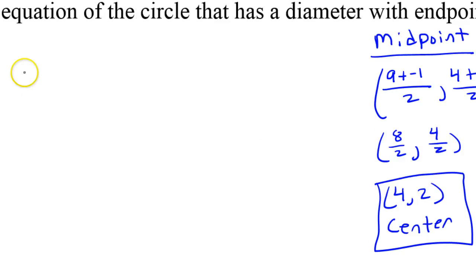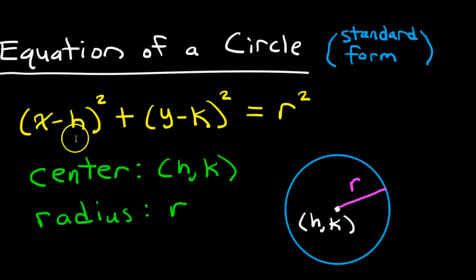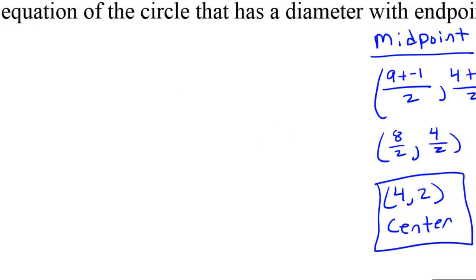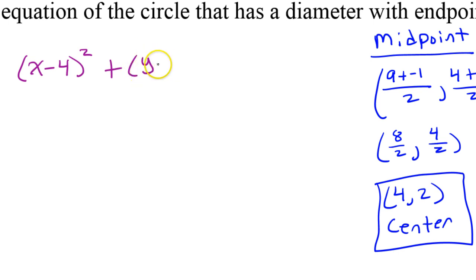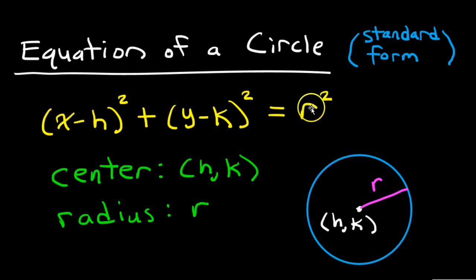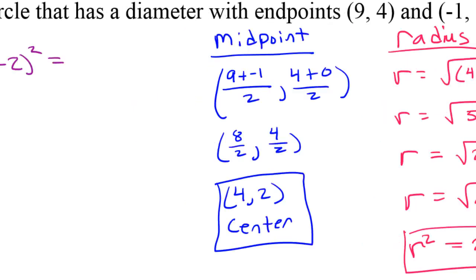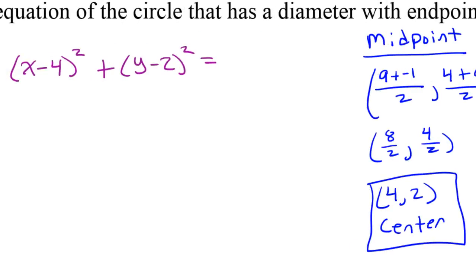Using this center and this r², I should be able to easily write the equation of the circle. Remember how the equation of a circle goes in standard form: (x - h)² + (y - k)². The minus h and minus k means I do the opposite of these numbers inside the equation. So I'm going to have (x - 4)² + (y - 2)², and then r² goes here. We just found that r² is 29, so we simply put 29. And that's it.